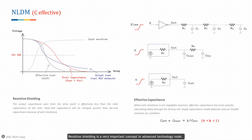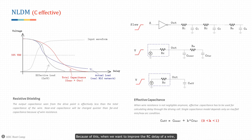Resistive shielding is a very important concept in advanced technology nodes — it is dominant in the case of long wire and makes wire delay calculation pessimistic. Because of this, when we want to improve the RC delay of a wire it's better to reduce the resistance at the near end of the drive output, so it can reduce the inaccuracy of the delay model and improve overall delay.